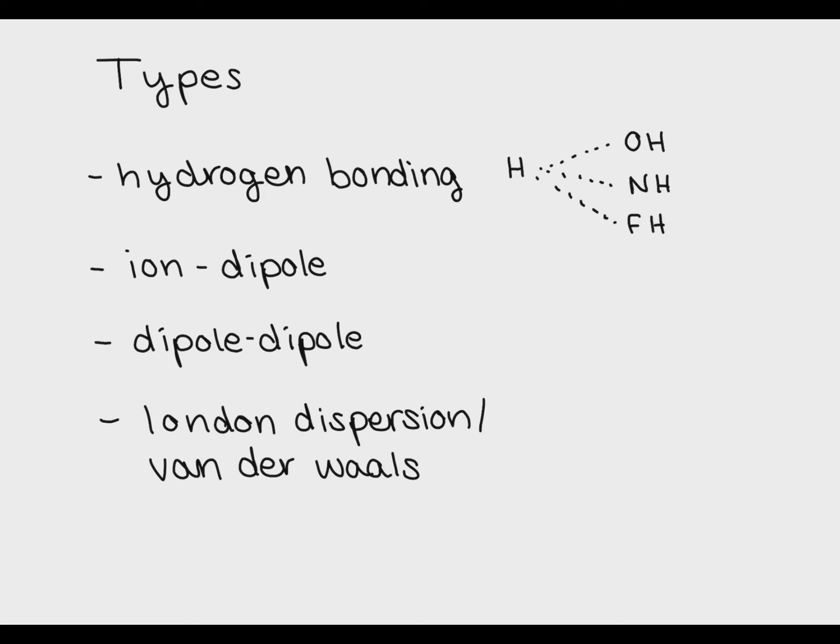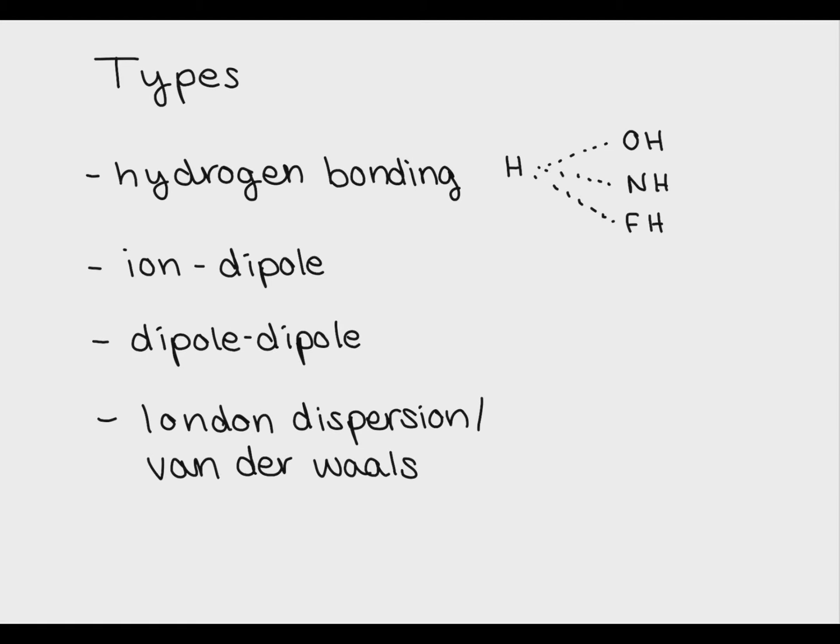An ion-dipole interaction is the attraction between an ionic compound and a covalent compound. One of the charges of the ionic compound is attracted to a partial charge, either positive or negative, of the covalent compound.